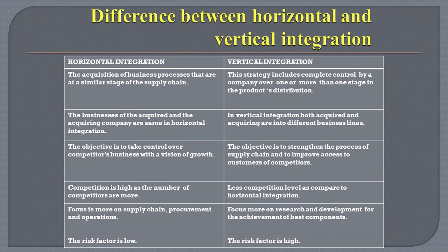Let's discuss the main differences between horizontal and vertical integration. Horizontal integration means the acquisition of business processes that are at a similar stage of the supply chain. Whereas vertical integration includes complete control by a company over one or more than one stage in the product's distribution. In horizontal integration, the businesses of the acquired and acquiring company are the same, whereas in vertical integration both acquired and acquiring are in different business lines. The objective of horizontal integration is to take control over competitors' business with a vision of growth, whereas the objective of vertical integration is to strengthen the supply chain process and improve access to customers.